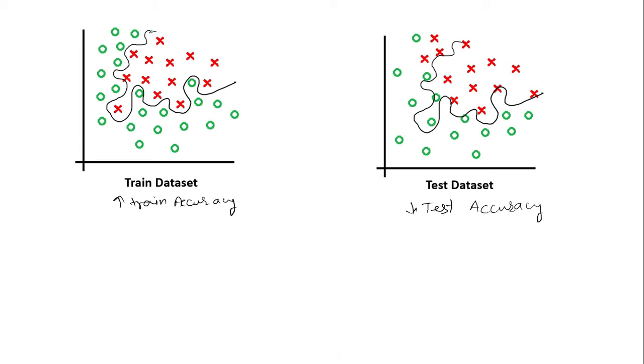Thus we will have high train accuracy but low test accuracy and this condition is called the overfitting condition. What we ideally want is a smooth curve like this that can fit well both in the training data set as well as in the test data set. So to do this we use regularization.